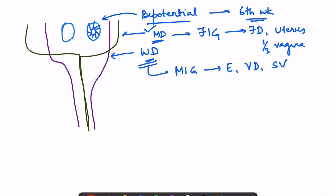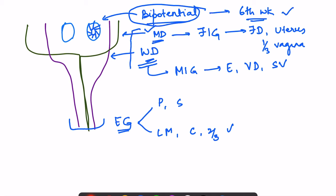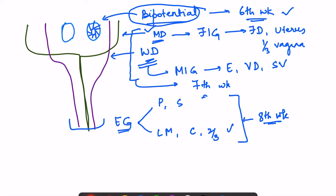One of the ducts survives while the other regresses. We will see what are the stimuli for the formation of testis or ovary, and for female or male internal genitals. Finally, external genitals will either form the male external genitals — penis and scrotum — or the female external genitals — labia majora, labia minora, clitoris, and lower two-thirds of the vagina. Bipotentiality for gonads lasts until the sixth week, for internal genitals until the seventh week, and for external genitals until the eighth week.